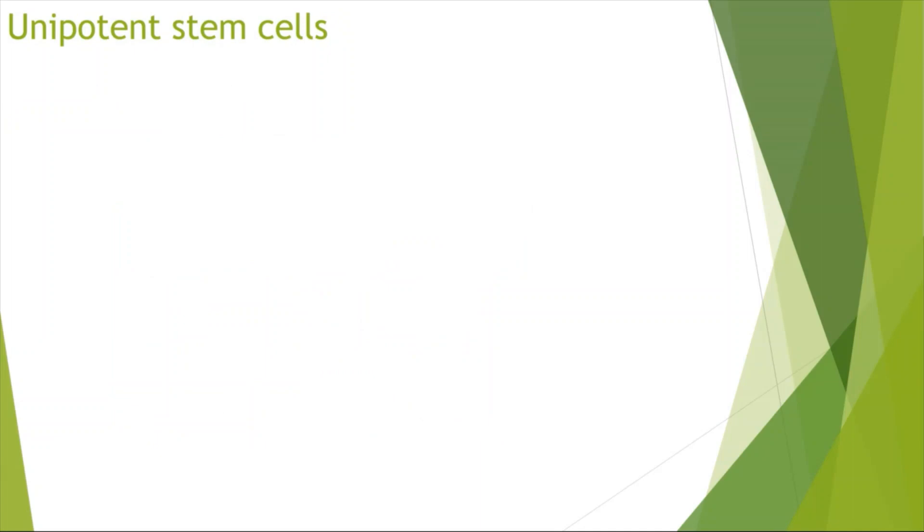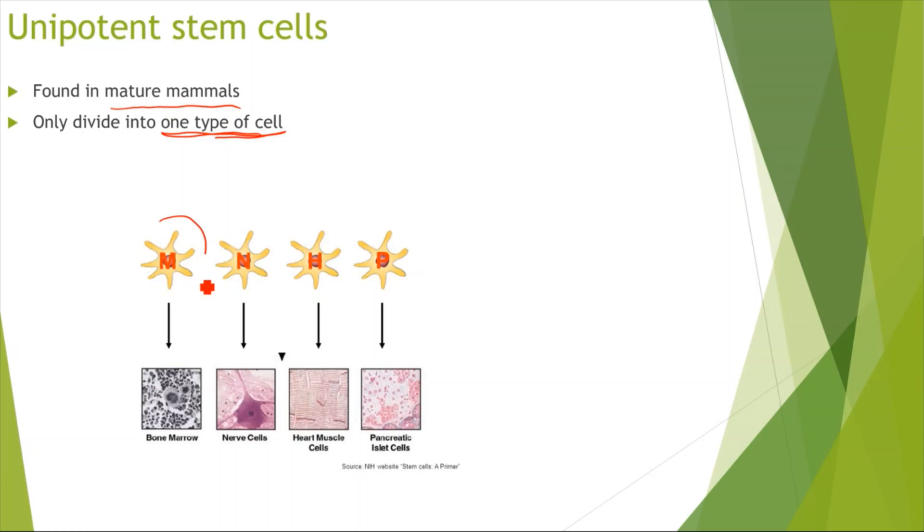Okay, so finally looking at unipotent stem cells. So these unipotent stem cells are found again in mature mammals and they can only divide into one type of cell. So for example if this was our unipotent stem cell, this is only dividing into the bone marrow cells. If this was my unipotent stem cells, this is only dividing into my heart muscle cell or my cardiomyocytes. So they can only divide into one type of cell.